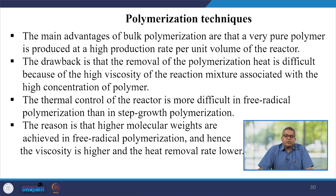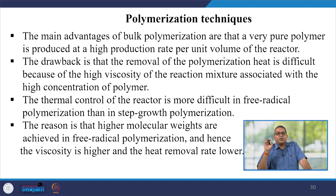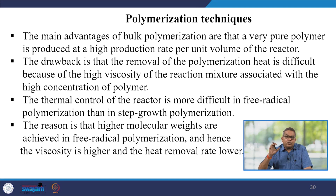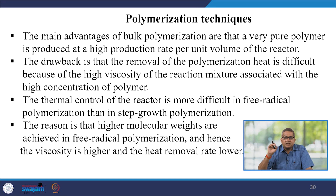The main advantage of bulk polymerization is that very pure polymer is produced at a very high production rate per unit volume of the reactor. However, there are certain drawbacks: the removal of polymerization heat is extremely difficult because of the high viscosity of the reaction mass associated with the high concentration of polymers. When polymeric chains are entangled with each other, the viscosity is very high, making temperature control very difficult. The thermal control of the reactor is more difficult in free radical polymerization than in step growth polymerization because high molecular weights are achieved, hence viscosity is higher and heat removal rate is lower.